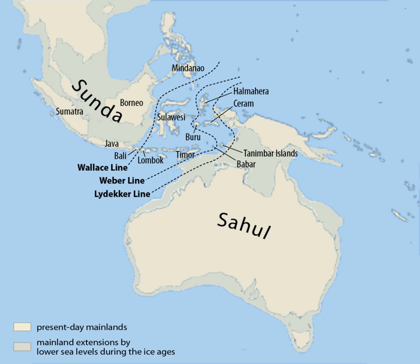The presence of a savanna corridor—even if fragmented—would have allowed for savanna-dwelling fauna as well as early humans to disperse between Sundaland and the Indo-Chinese biogeographic region. Emergence of a savanna corridor during glacial periods and subsequent disappearance during interglacial periods would have facilitated speciation through both vicariance and geodispersal. Morley and Flenley and Heaney were the first to postulate the existence of a continuous corridor of savanna vegetation through the centre of Sundaland during the last glacial period, based on palynological evidence.